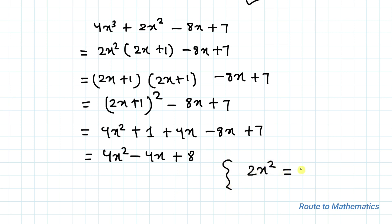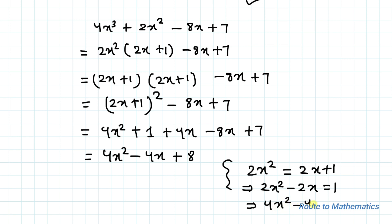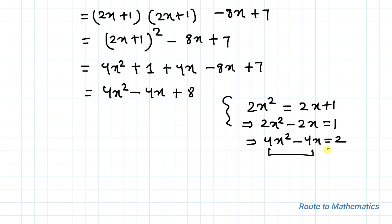Again from Equation 1, we have 2x² = 2x + 1. Taking 2x to the left-hand side gives 2x² - 2x = 1. Multiplying both sides by 2 gives 4x² - 4x = 2. Substituting this value in our expression, we get 2 + 8 = 10, which is the answer to the given polynomial.